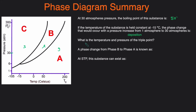The next question asks: what is the temperature and pressure of the triple point? The triple point is where all three lines intersect. Tracing that point, the pressure is 6 ATM and the temperature is negative 15 degrees Celsius.